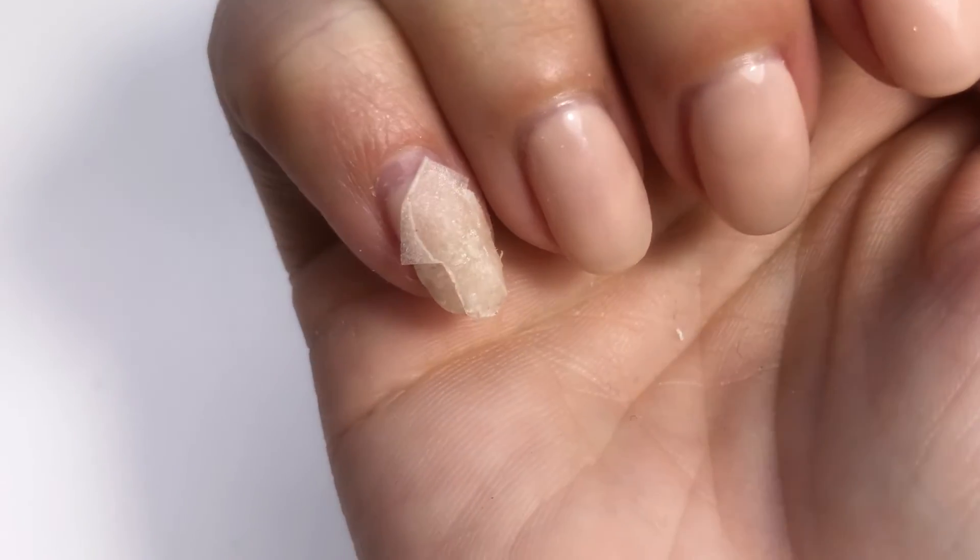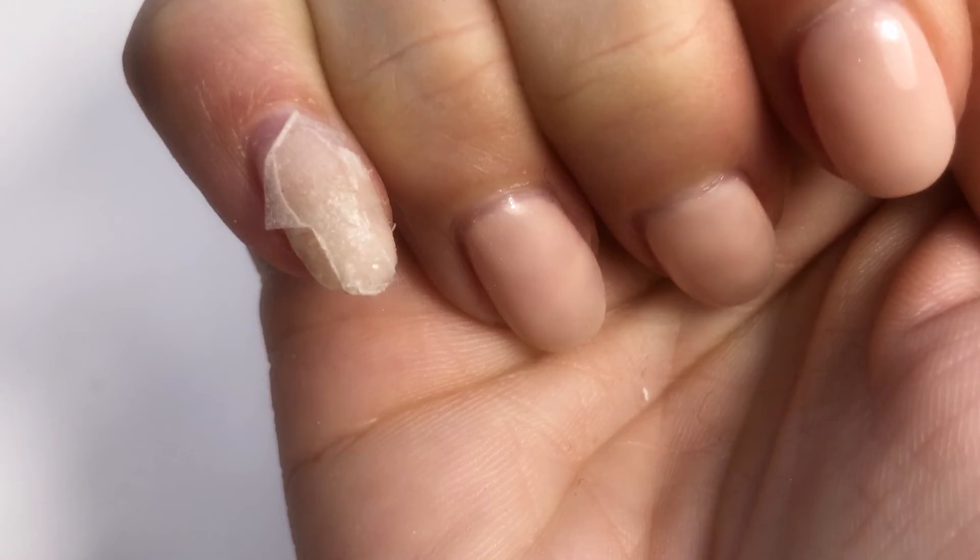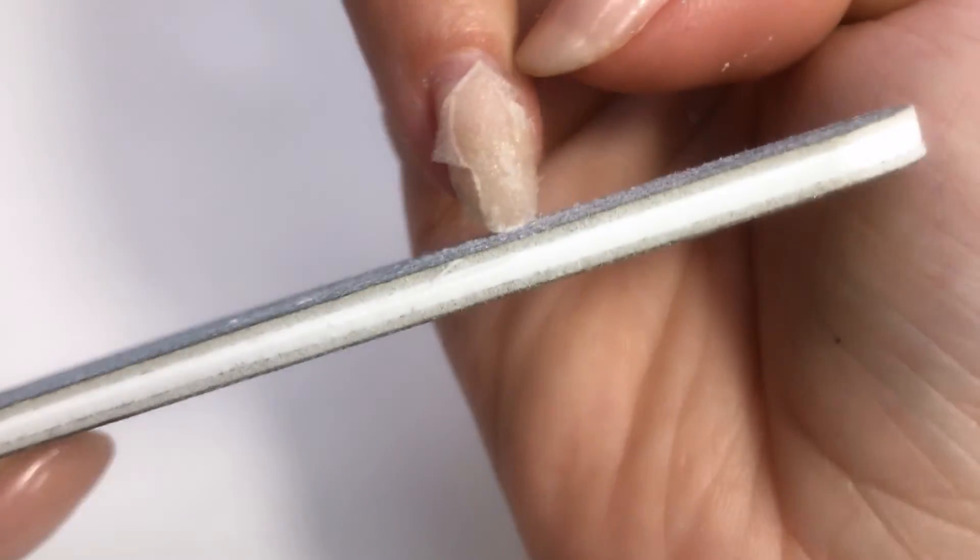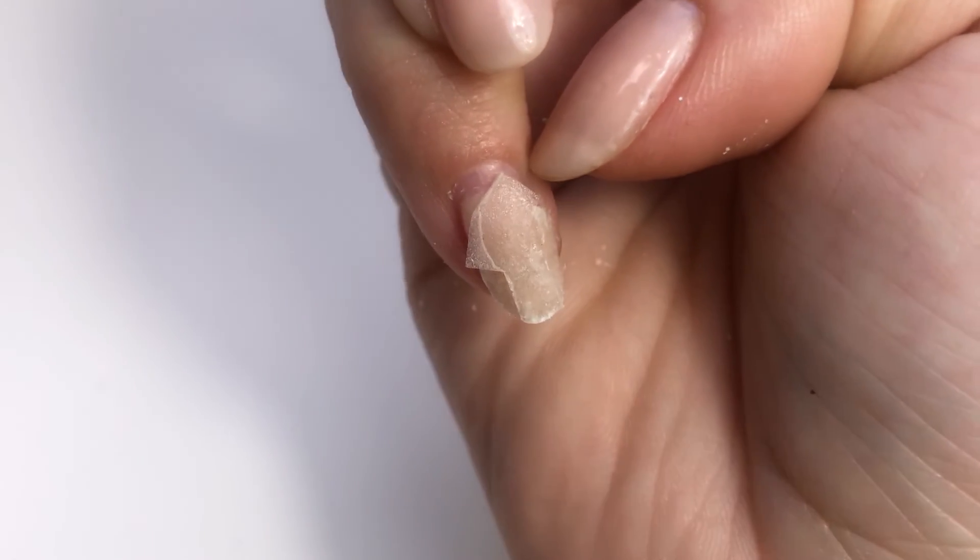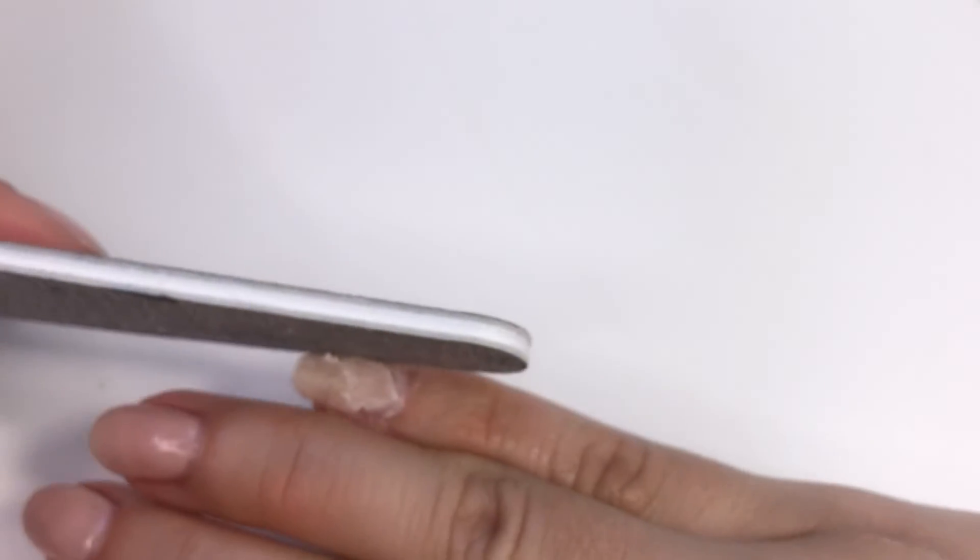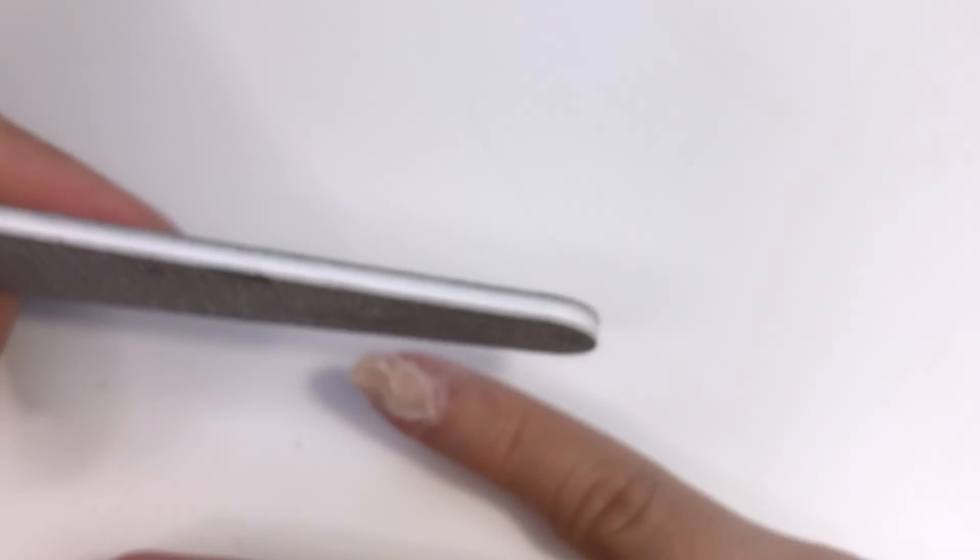Then you're gonna take your nail file and start filing the nail. We're gonna file down the length. The shorter that you make your nail the harder it will be to break it. Now start filing the side walls and the top to make it smooth. Make sure that you're actually not over filing and you leave the pieces of fabric inside the nail.